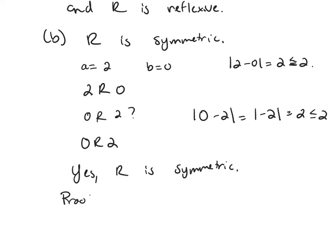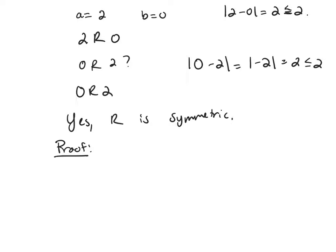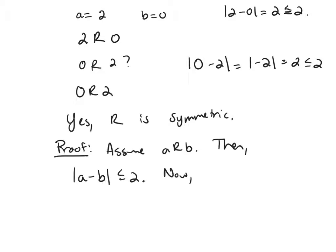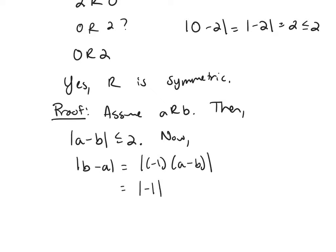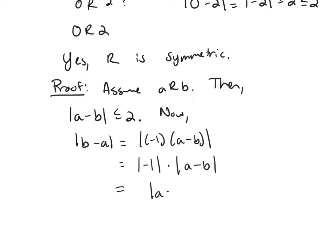Proof: Assume that A is related to B. Then the absolute value of A minus B is less than or equal to 2. Now for B related to A, I need the absolute value of B minus A. I can factor out a negative 1, and because the absolute value of a product equals the product of absolute values, the absolute value of negative 1 times (A minus B) equals the absolute value of A minus B.